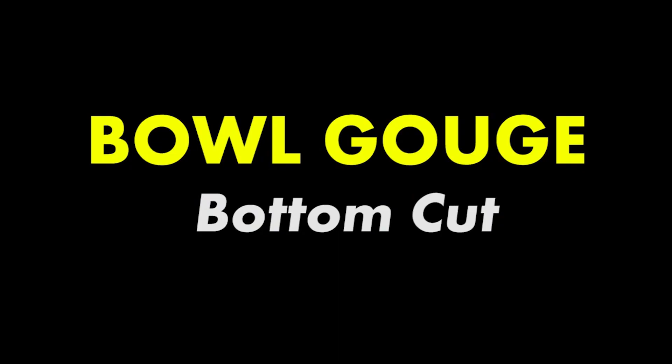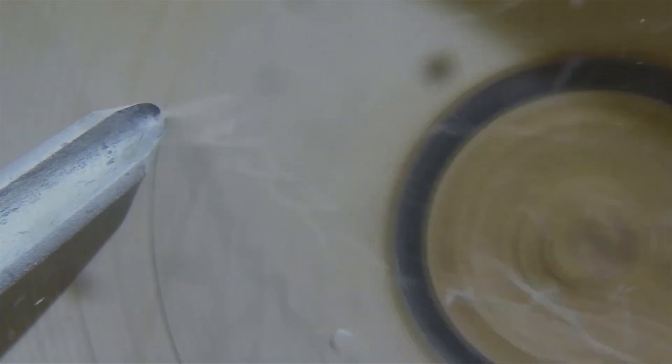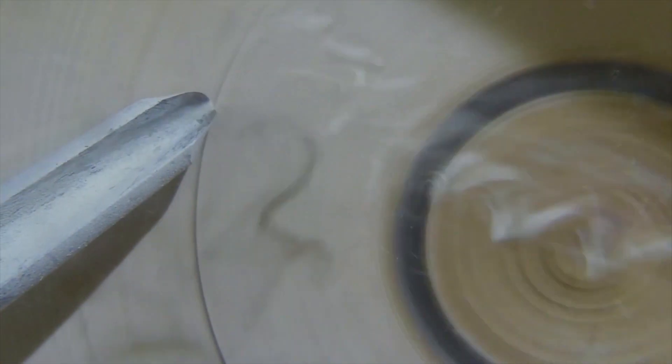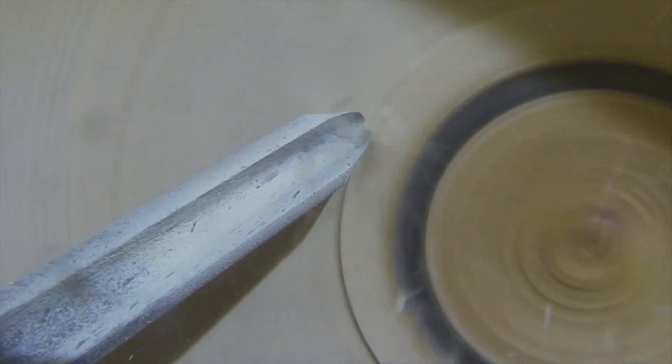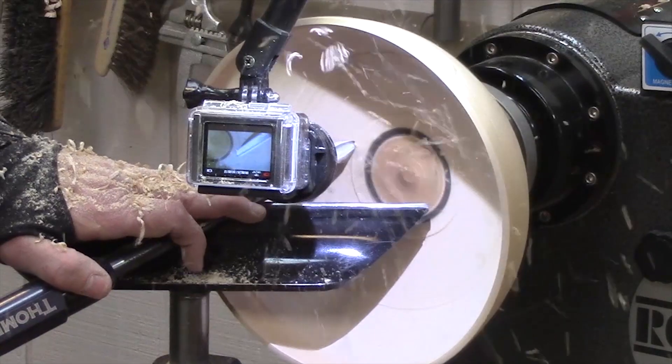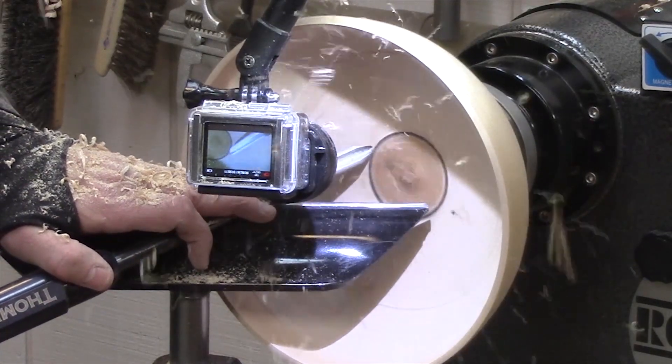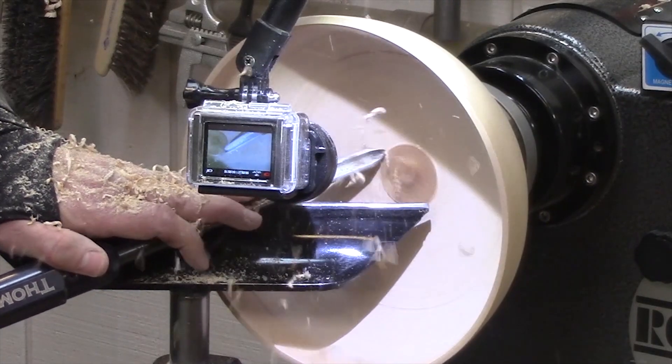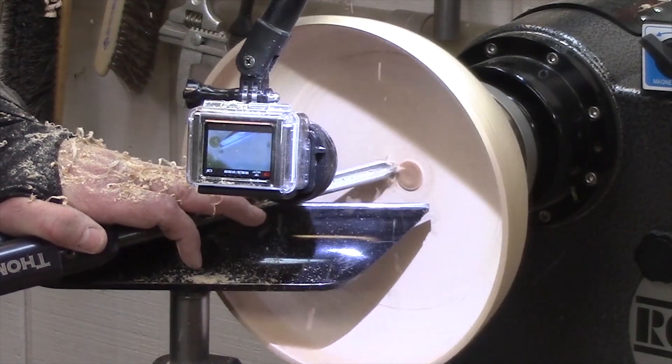Now to close, what I want to show you is how you do the bottom cut in a bowl without getting a catch. A lot of people don't realize you have to have the tool tip higher than the center of the bowl. And as you watch this, the tool tip is coming down. It's riding that wheel that you're making. And if you watch the handle on the tool from this angle, you can see how the handle rises and the tool tip goes down as it nears the center.